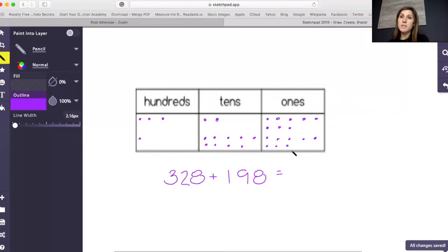So I have both my add-ins on the place value chart. Now I can count up all of my dots to find my answer.